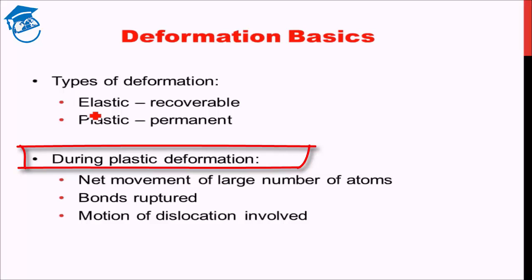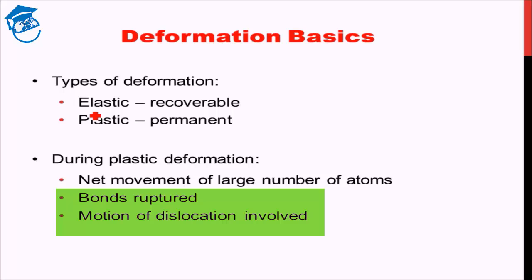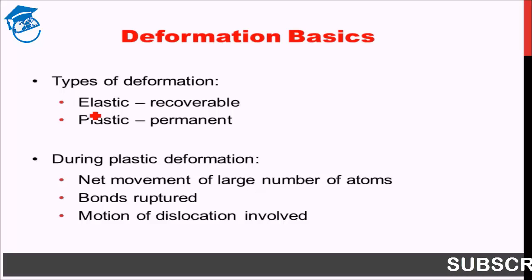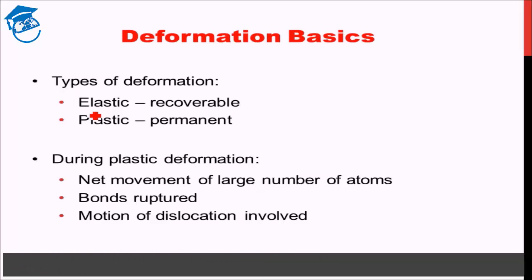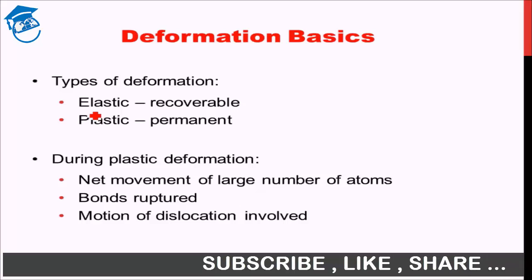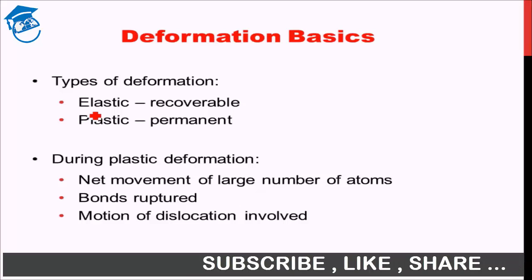During plastic deformation, what happens is that a net movement of a large number of atoms takes place. There is a net movement of atoms, rupturing of bonds, and motion of dislocations involved. Since the bonds are breaking, it is a permanent deviation from the norm. In elastic deformation the bonds do not break — they extend, thereby giving the same extension — whereas in plastic deformation the bonds actually break, which makes it permanent.